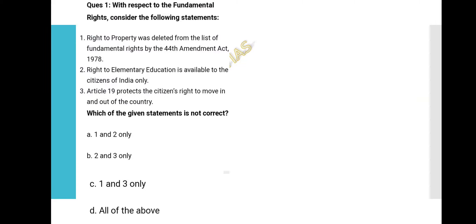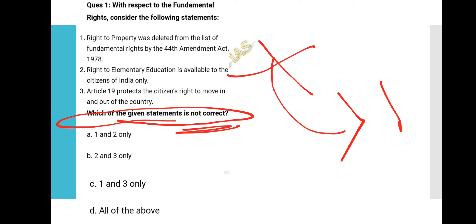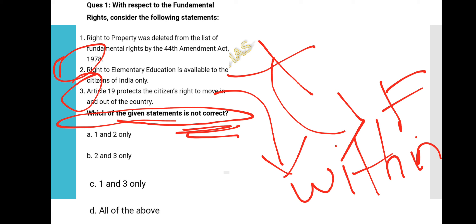Question 1: With respect to fundamental rights, consider the following statements. Statement 1: Right to property was deleted from the list of fundamental rights by the 44th Amendment Act of 1978. Statement 2: Right to elementary education is available to citizens of India only. Statement 3: Article 19 protects citizens' right to move in and out of the country. Which statements are not correct? Statement 2 is wrong because elementary education is also available to foreign students. Statement 3 is wrong because Article 19 protects movement within the country, not in and out.